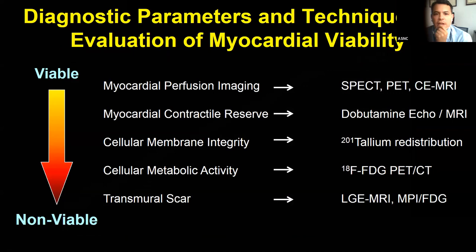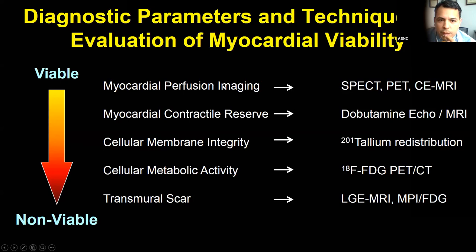There are different ways to assess myocardial viability. There's a continuum between viable and non-viable myocardium. We have myocardial perfusion imaging with SPECT, PET, or MRI; myocardial contractile reserve with dobutamine echo or dobutamine MRI; cellular membrane integrity with thallium; cellular metabolic activity with FDG-PET; and direct assessment of scar transmurality with MRI or combined myocardial perfusion with FDG.